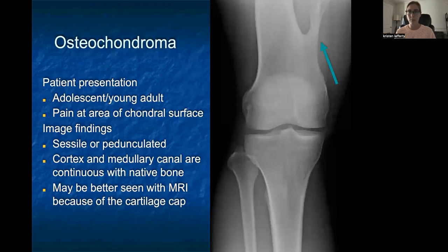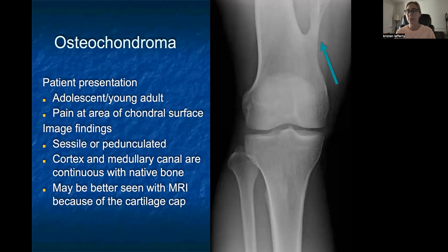The last benign bone lesion is osteochondroma. Patients are usually adolescents or young adults and may have pain at the area of the chondral surface, especially if these are larger. Radiographic findings consist of sessile or pedunculated polyp-like lesions contiguous with the native cortex of the bone with no real separation. These can usually be seen on x-ray, but because they have a cartilage cap, they may be better seen with MRI. If a patient has significant pain and surgery is being considered, MRI is a good idea to better characterize size and location for surgical planning. Otherwise, observation if there is no pain.